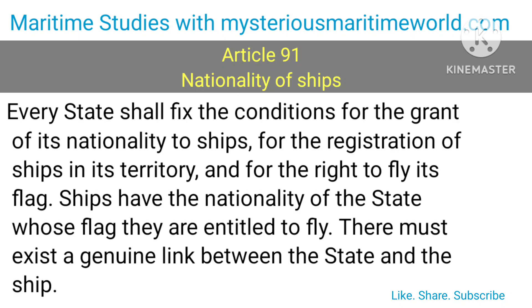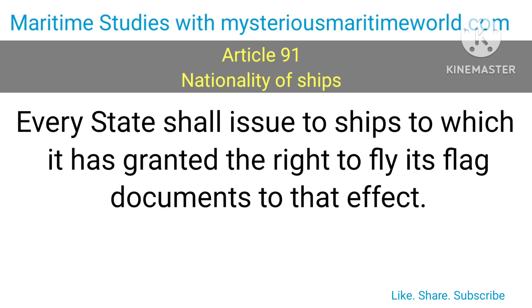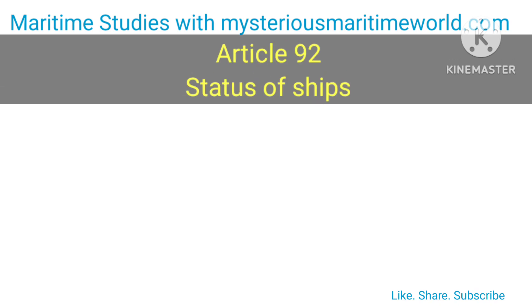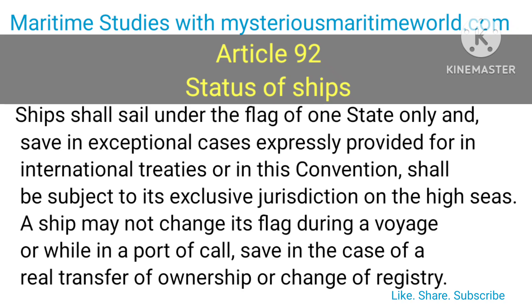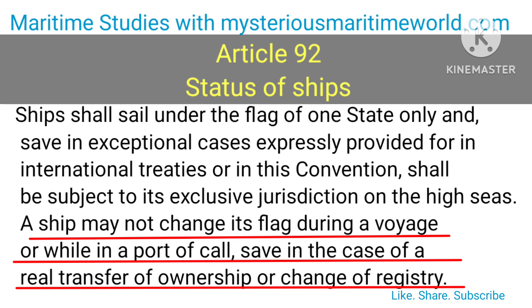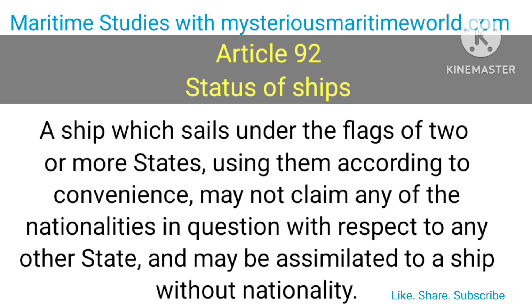Article 91 — Nationality of Ships: Every state shall fix the conditions for the grant of its nationality to ships, for the registration of ships in its territory, and for the right to fly its flag. Ships have the nationality of the state whose flag they are entitled to fly. There must exist a genuine link between the state and the ship. Every state shall issue to ships to which it has granted the right to fly its flag documents to that effect. Article 92 — Status of Ships: Ships shall sail under the flag of one state only and, save in exceptional cases expressly provided for in international treaties or in this convention, shall be subject to its exclusive jurisdiction on the high seas. A ship may not change its flag during a voyage or while in a port of call, save in the case of a real transfer of ownership or change of registry. A ship which sails under the flags of two or more states, using them according to convenience, may not claim any of the nationalities in question with respect to any other state and may be assimilated to a ship without nationality.